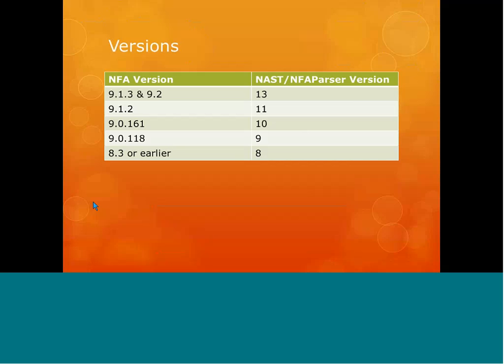The version numbering is a little bit unusual. You can tell that in the beginning the version numbers did match the version of NFA, but eventually they started releasing newer versions of the parser and the version numbers didn't match. The important thing to remember is that when you are working with the NFA parser or the NAST tool, make sure that you have the right version. If you try to run version 10 on version 9.2 NetFlow, it's not going to pull out the right kind of data.